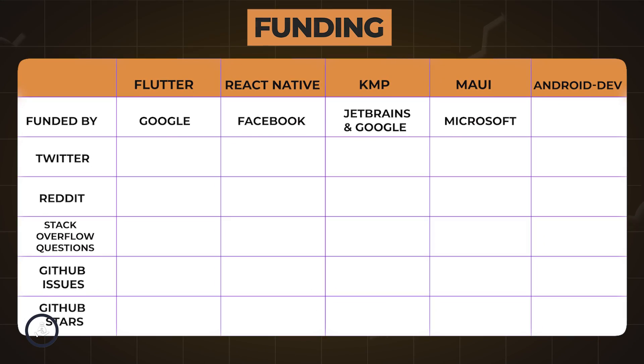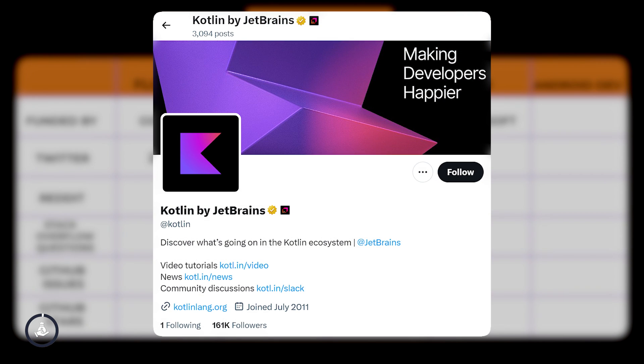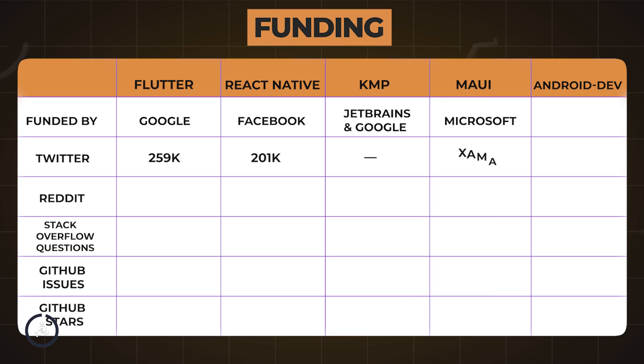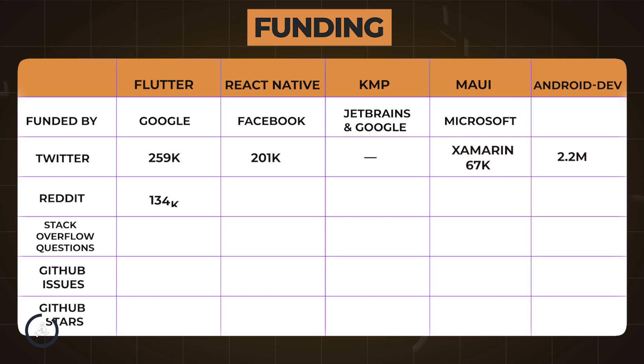Let's talk about funding and stakeholders. How well a software project is funded depends on the companies backing it, and another aspect is how much of a bang the project is making in the developer community. Looking at Twitter followers: Flutter has around 259k, React Native has 201k, KMP doesn't have a Twitter page, Kotlin language has around 160k followers, and Xamarin has around 67k. Interestingly, the Android Developers Twitter handle has around 2.2 million. On Reddit: Flutter has around 134k, React Native is 129k, and KMP doesn't have a Reddit page.